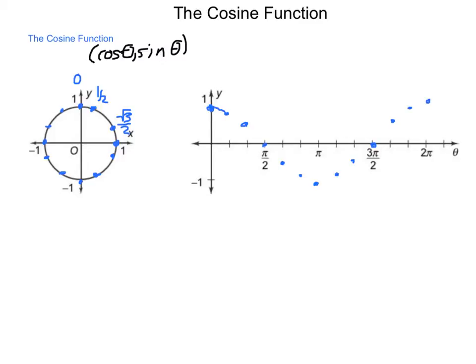So we end up with a graph that has the same general properties as our sine wave, except we start at our maximum. So this one, our pattern is max, 0, min, 0, max.